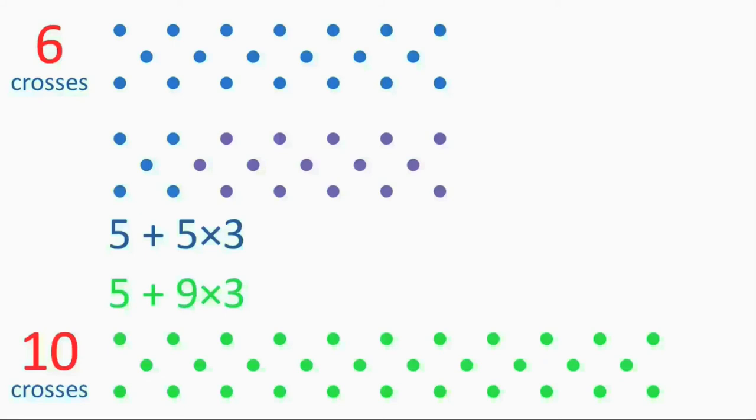The number of sets of three that we add to the initial five dots depends on the number of crosses in a chain. In fact, it's one less than the number of crosses. We can show this by rewriting our expressions like this.